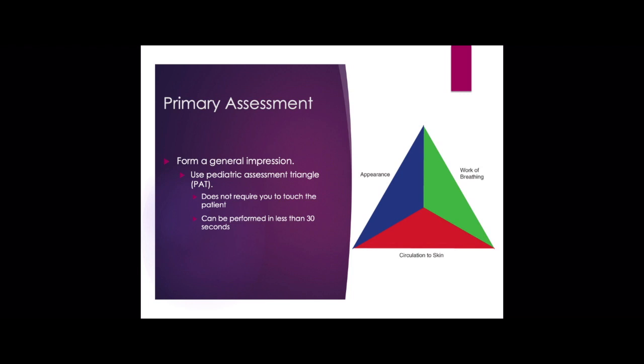Just as with adult patients, one of the first things we do before starting our primary assessment is get a general impression of our patient. The pediatric assessment triangle is how we determine that general impression for a pediatric patient. The cool thing is it doesn't require you to touch the patient at all, and it can be done within 30 seconds of patient contact. We base this assessment on three things: the appearance of the child, the effort or work of breathing, and the circulation.